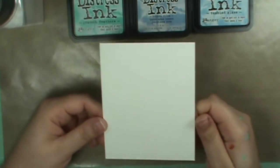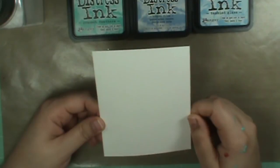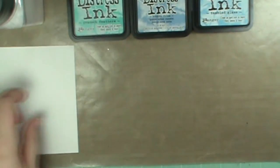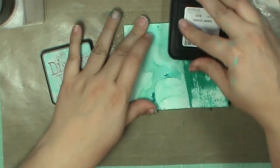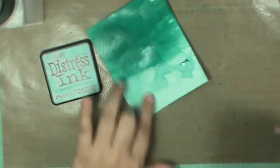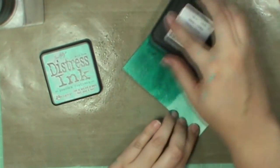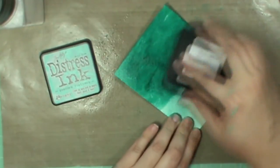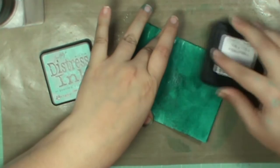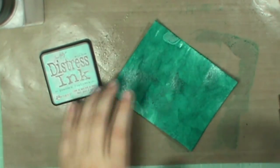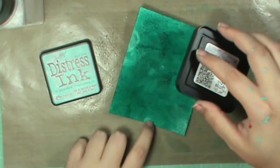I have a piece of watercolor paper here, so let's get started. I'm using tumbled glass, broken china, and peacock feathers. Okay, so it's not going as dark as I want it to go, so I'm going to just take my peacock feathers here to give it the saturated color that I want.